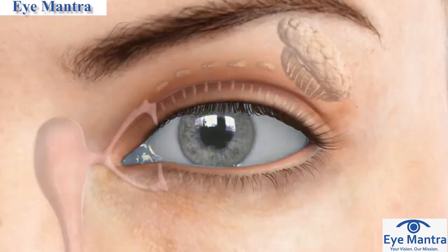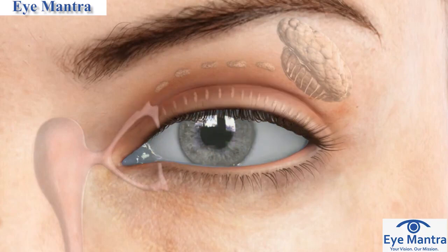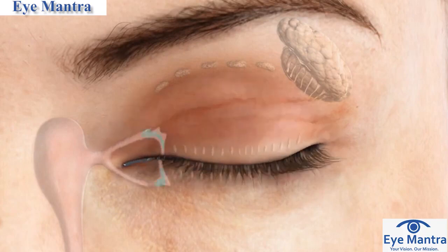When we blink, the eyelids smooth and spread the tear film so that it is uniform across the surface of the cornea.